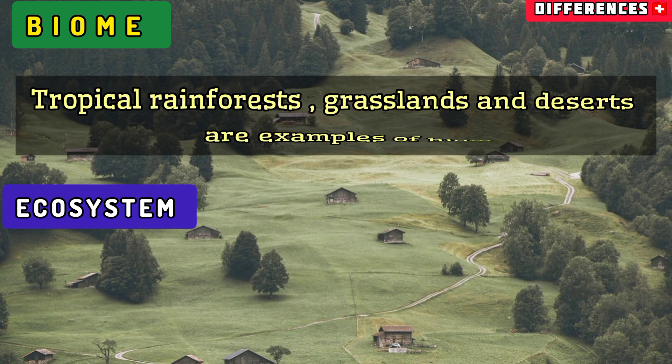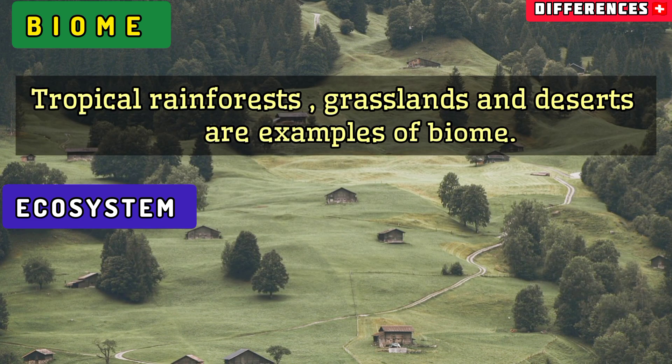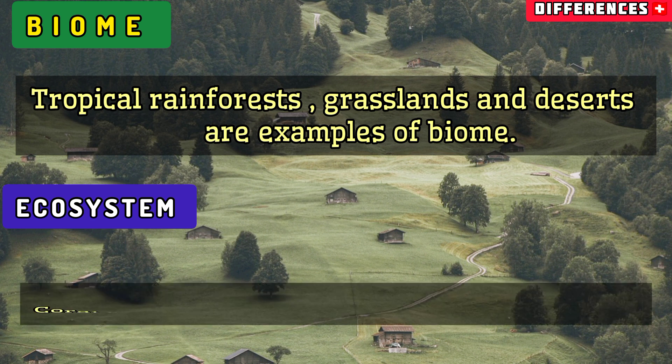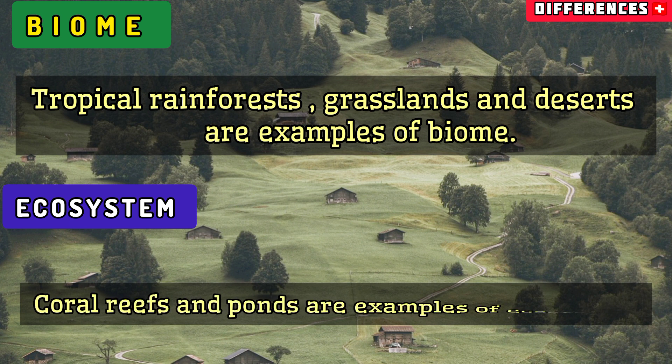Tropical rainforests, grasslands, and deserts are examples of biome. Coral reefs and ponds are examples of ecosystem.